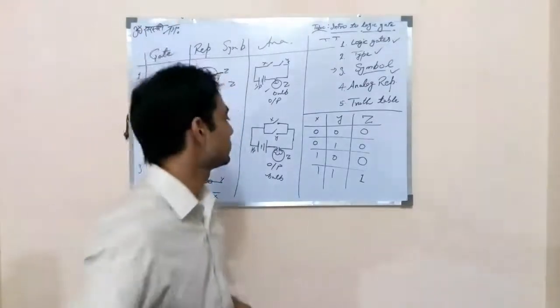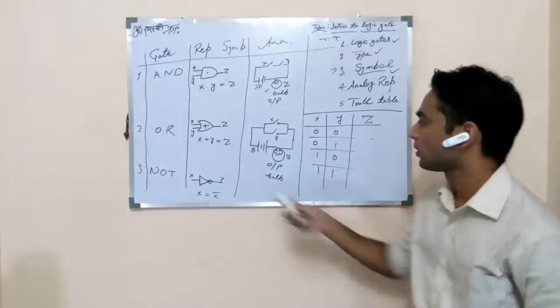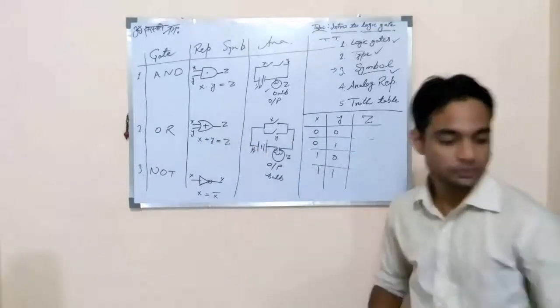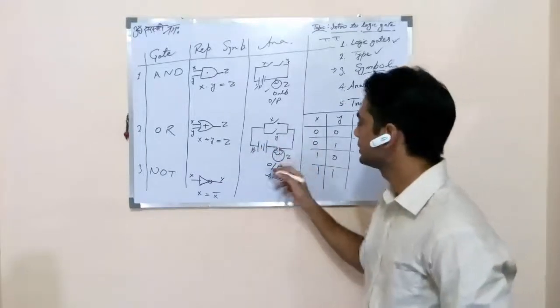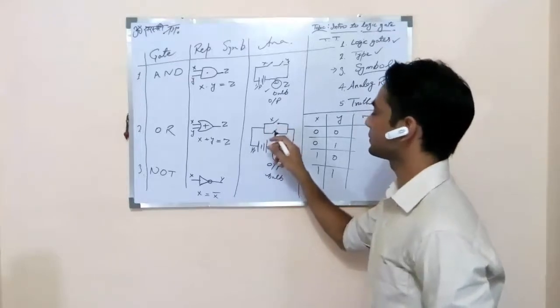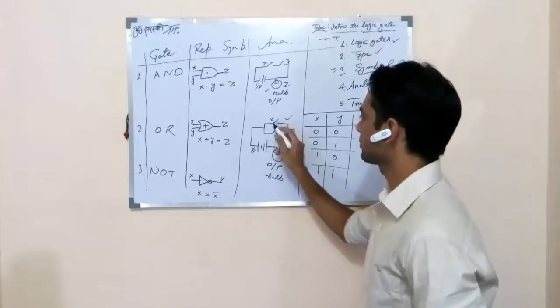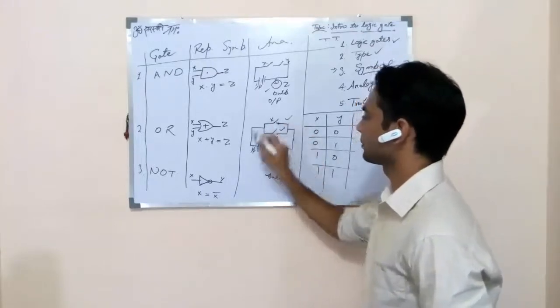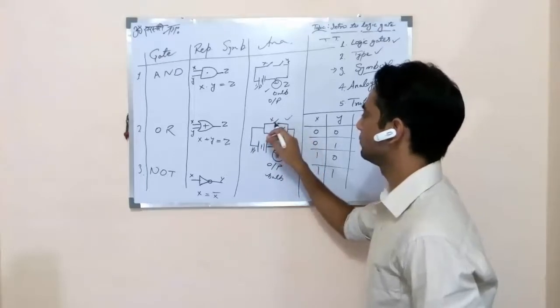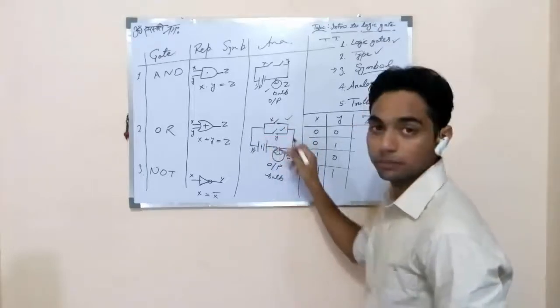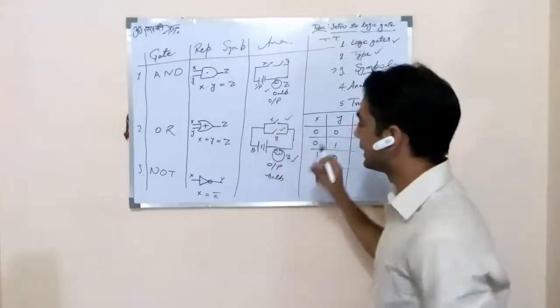Now we proceed on OR gate. So for OR gate, this is the analog representation of OR gate. If we connect any of buttons like X or Y, bulb will glow. How? Like this. Such it becomes complete and bulb glows. And if we connect this, then circuit is complete. If we connect both, then circuit becomes complete.